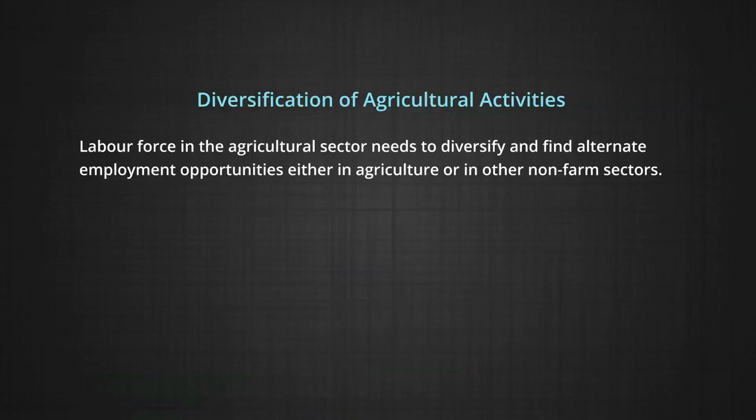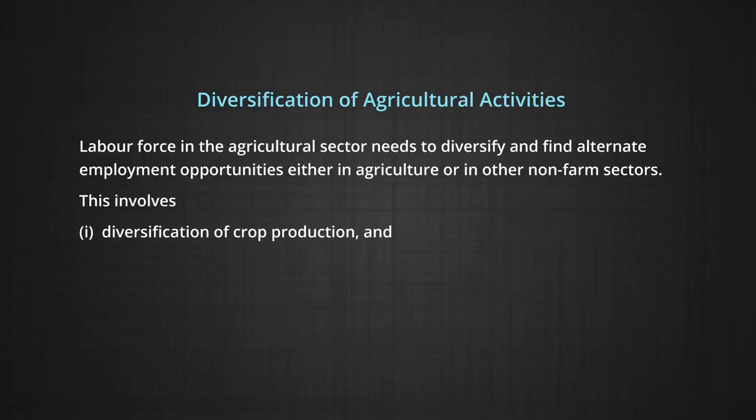Diversification of agricultural activities: over the period, the rural population in India has increased substantially. The increased population cannot be accommodated in agriculture alone. Decreasing farm size, volatile monsoon, instability in income, and poor irrigation facilities force farmers to find alternative sources of income. The labor force in the agricultural sector needs to diversify and find alternate employment opportunities either in agriculture or in other non-farm sectors. This involves: number one, diversification of crop production, and number two, diversification of productive activity.